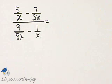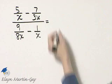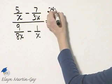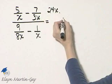Now since I'm multiplying the entire numerator by 24x and the entire denominator by 24x, I'll multiply every single term by 24x.